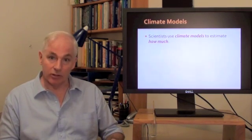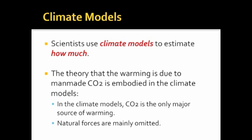Scientists use climate models to estimate how much. Now, the theory of man-made global warming is embodied in those climate models in two ways. First of all, in the climate models, CO2 is the only major source of warming. And secondly, the climate models omit nearly all the natural forces.